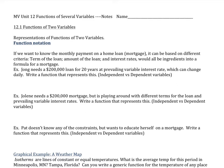If we want to know the monthly payment on a home loan, which we call a mortgage, it can be based on different criteria: terms of the loan, amount of the loan, and interest rates. Those will all be ingredients to find a formula for the mortgage. So if I say Jong needs a $200,000 loan for 20 years at a prevailing interest rate, which can change daily, we want to write a function that represents this. My first error right out of the blocks—I want to know the monthly payment and represent the monthly payment that way.